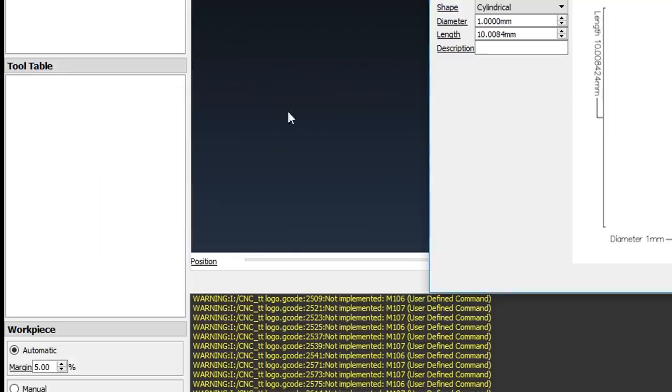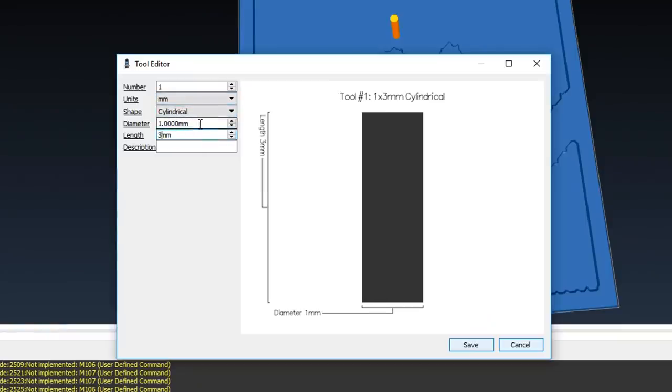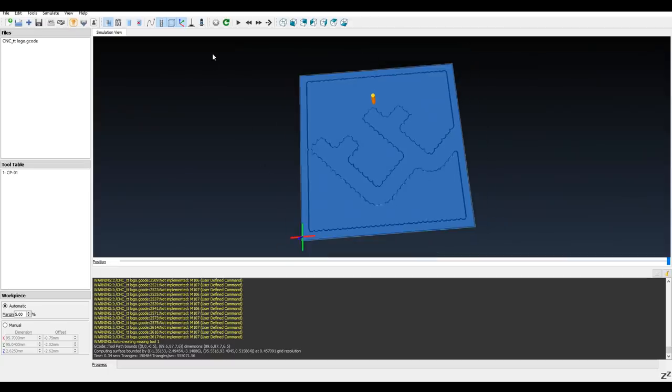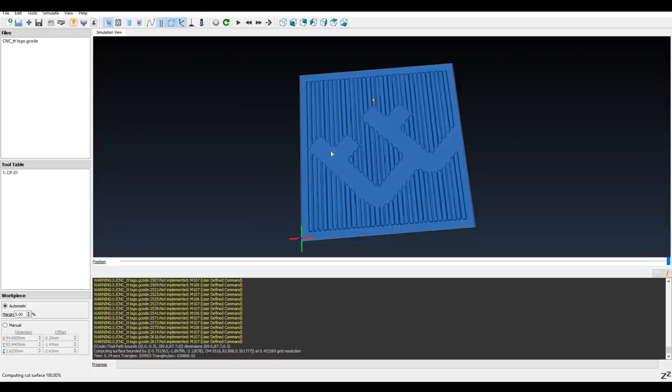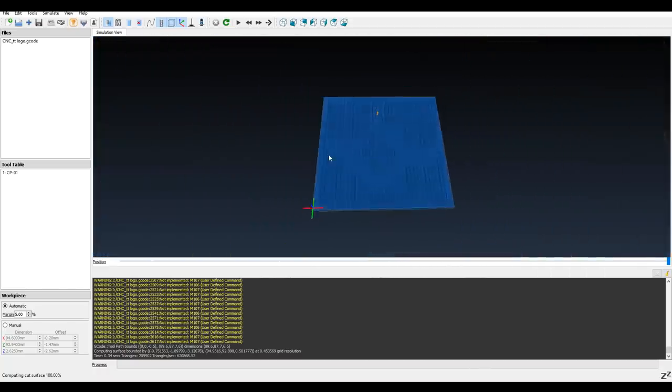To get an accurate preview, we need to right click and add a new tool matching that that's fitted to the machine, in this case 1mm diameter by 3mm length. After this is in place, we can hit the refresh button up the top to recalculate the toolpath, and now we should have an accurate representation of what the finished job is going to look like.